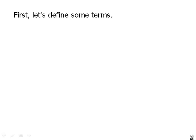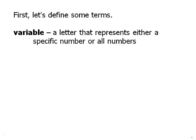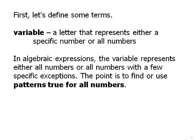Let's define some terms. A variable is a letter that represents either a specific number or all numbers. This is a subtle distinction. In algebraic expressions, the variable represents either all numbers or all numbers with very few exceptions, and the point in algebraic expressions is to find or use patterns true for all numbers.